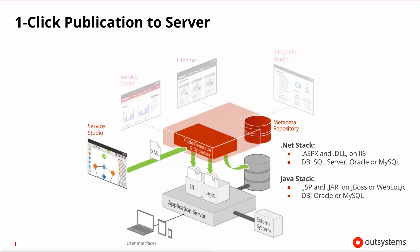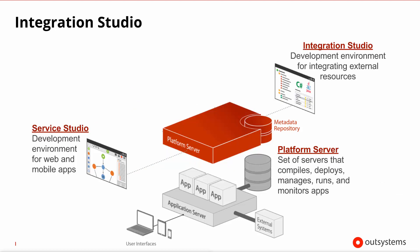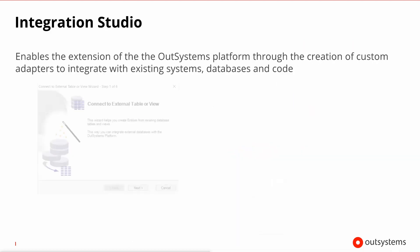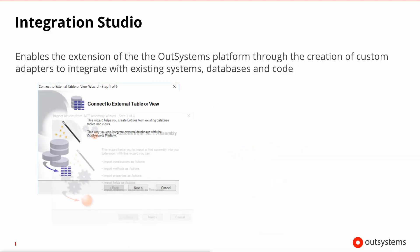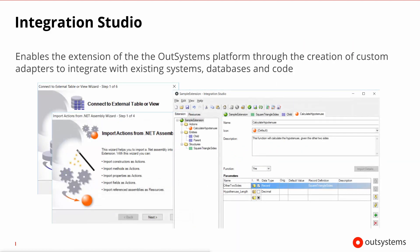Depending on which stack you're running the OutSystems platform, you may produce .NET assemblies and ASPXs or JAR files and Java server pages. Both OutSystems platform flavors are supported by a multitude of underlying database systems. Another development component is Integration Studio, which enables the extension of the platform through the creation of custom adapters that integrate with existing systems, databases and code, and we have a lesson on that later in the course.